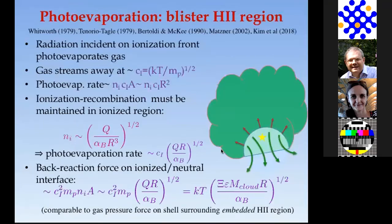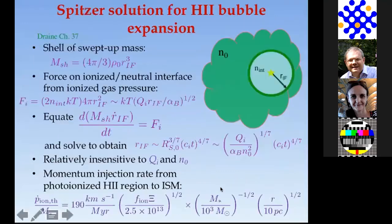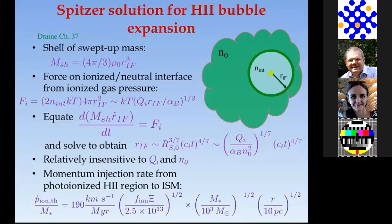A question came in asking for clarification on α_B. So α_B is the case B recombination rate coefficient. That includes recombinations to everything except the n=1 level. The reason you don't include the n=1 level is that if a photon recombines to that level, you basically just get the photon back again. Case A includes that; case B doesn't.